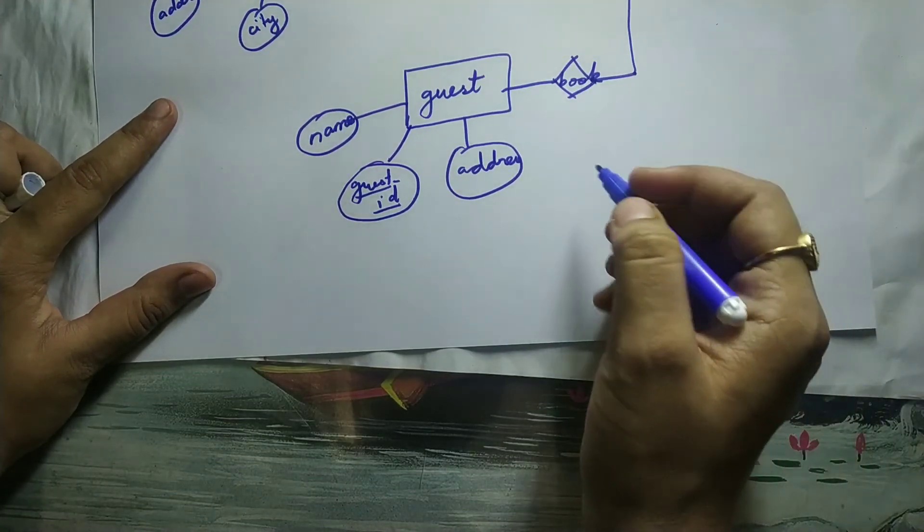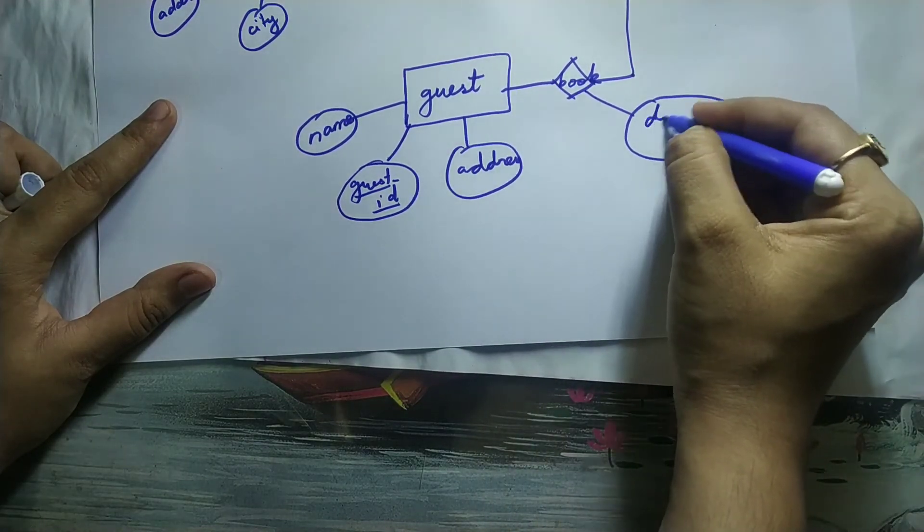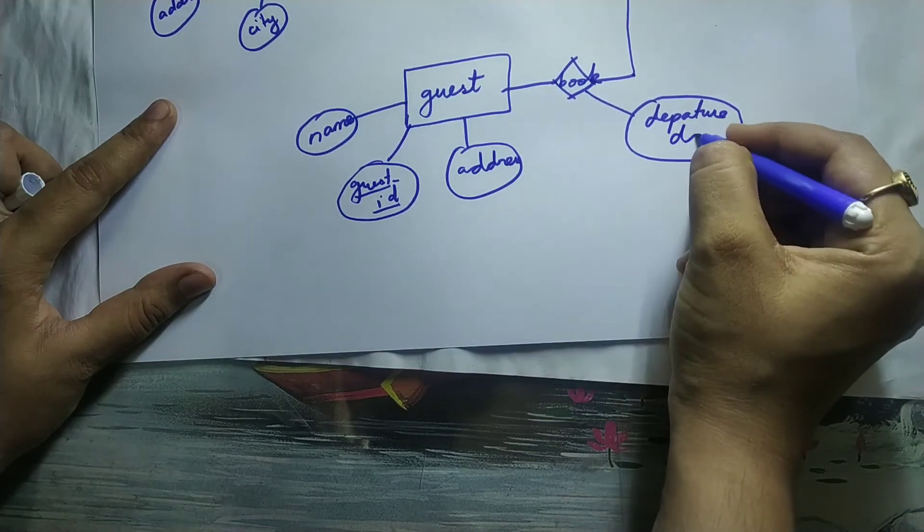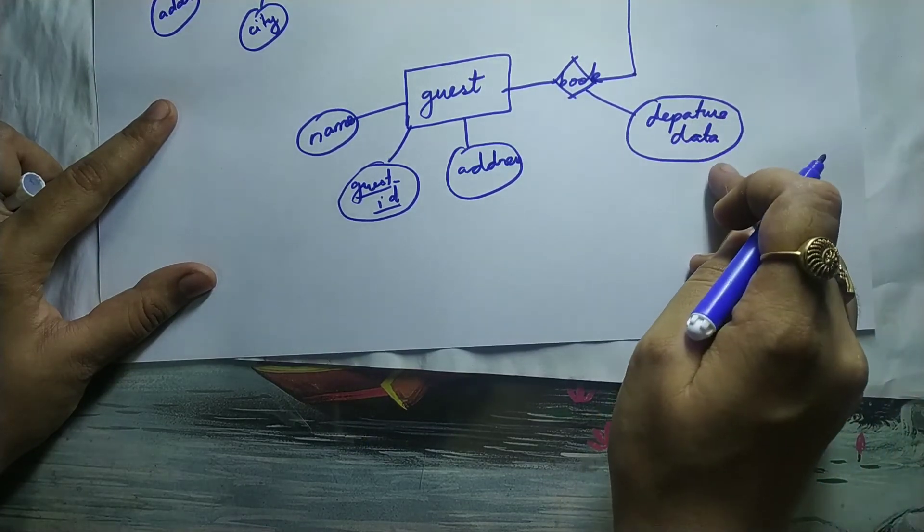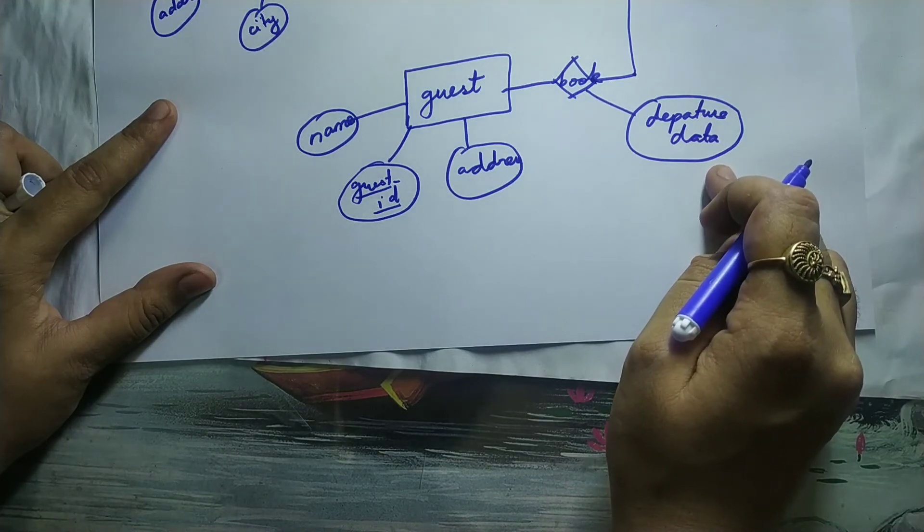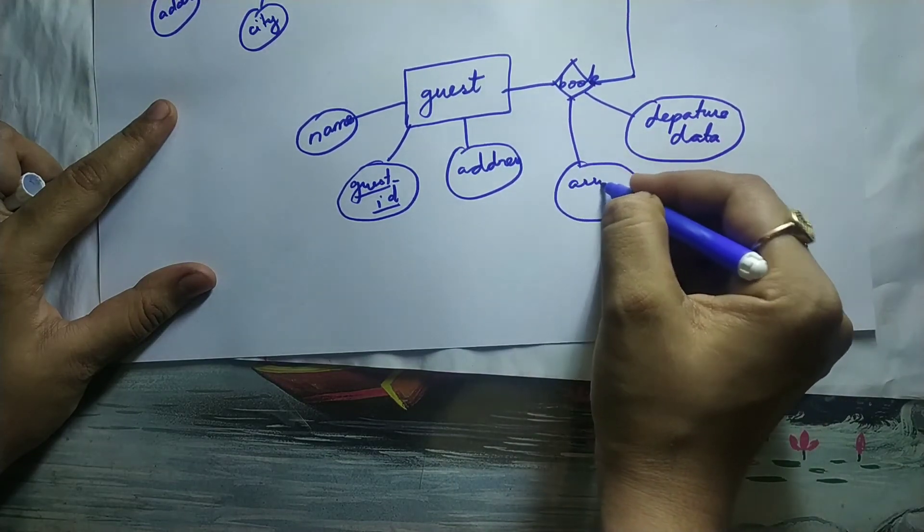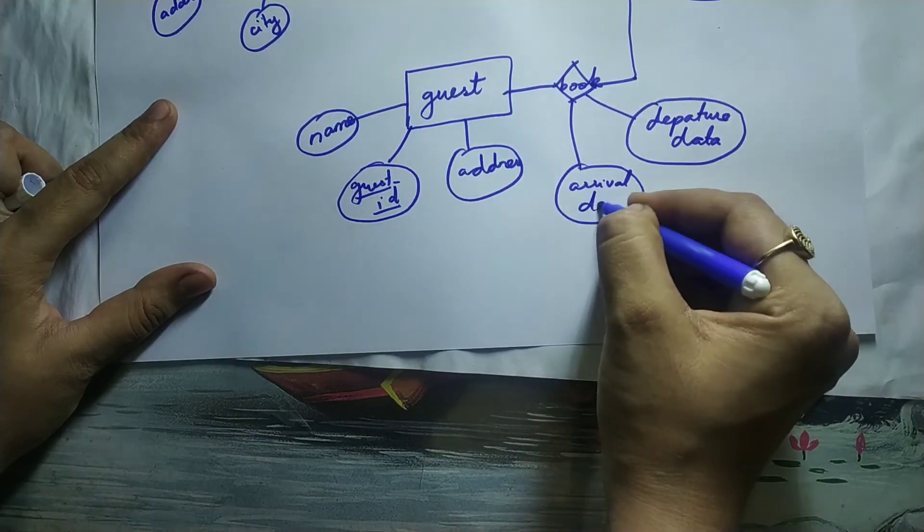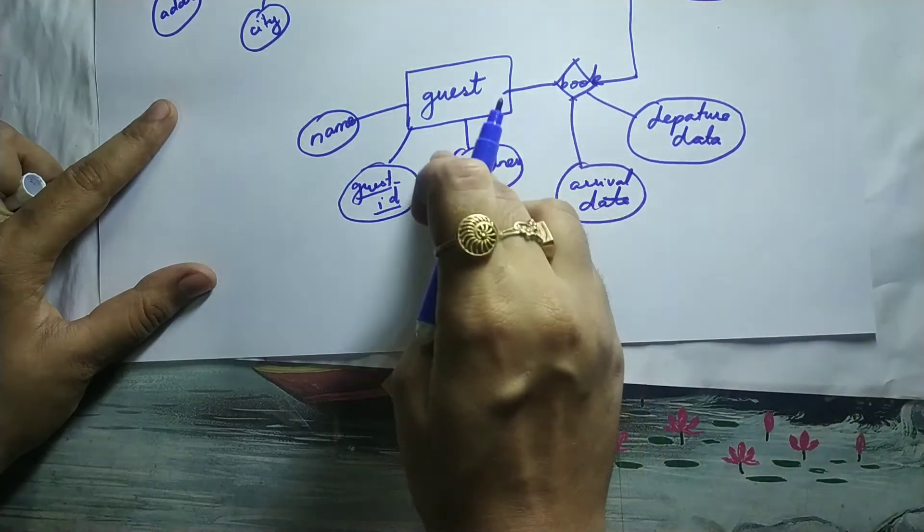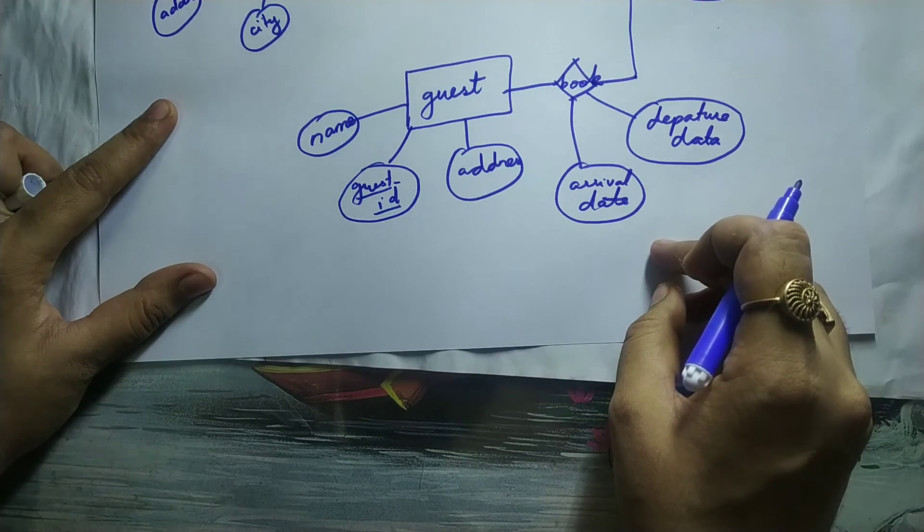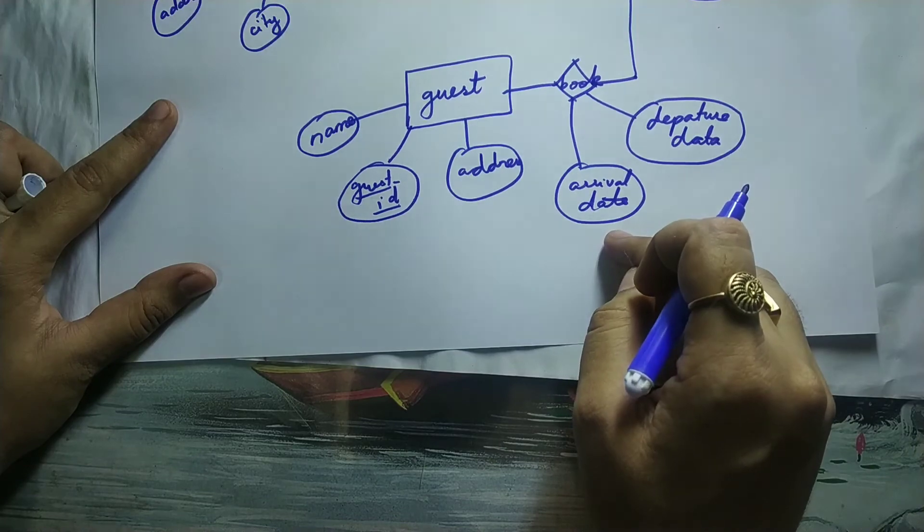Departure date and arrival date of the guest is also very important. Departure date, so the date the guest is expected to leave the hotel, that is departure date. Next is arrival date, the date in which the customer or the guest is expected to come to the hotel in order to stay in the room, that is arrival date.